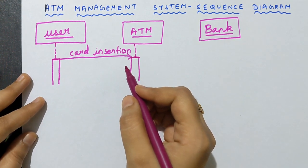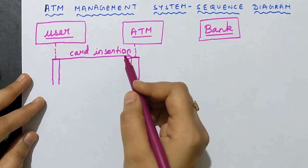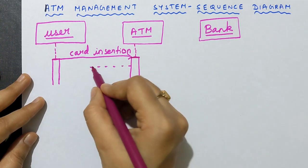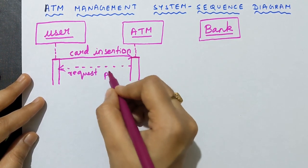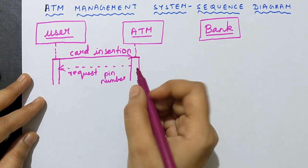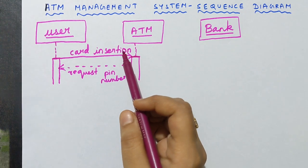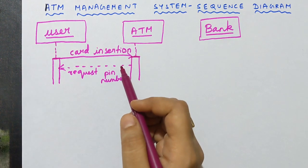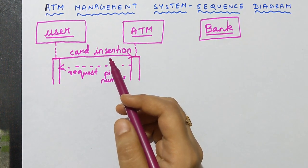After inserting the card, the ATM will respond by asking for your PIN number. A response is drawn as a dotted line with an arrow going back from ATM to user. So we draw a dotted arrow from ATM to user and label it 'requesting for PIN number.' After card insertion, since the user inserted the card, the ATM is responding by requesting the user to enter the PIN number. This happens at a different time — card insertion at one time, request PIN number at another.